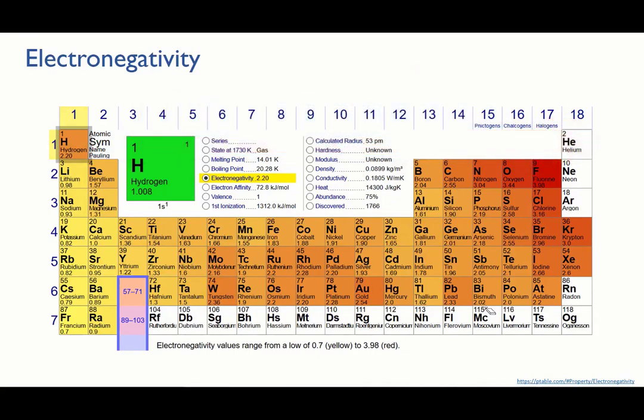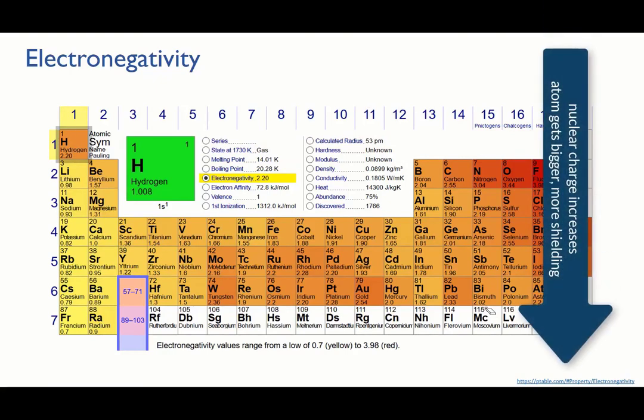Going down a group, the nuclear charge still increases, but it's more than cancelled out by the increased radius of the atom, and the extra electron levels that provide shielding, so electronegativity decreases.